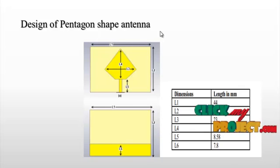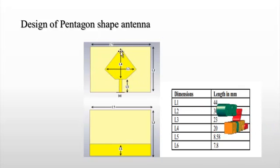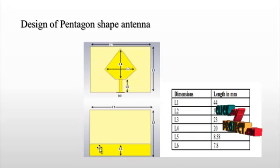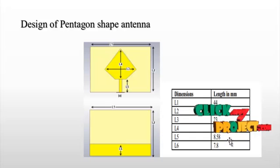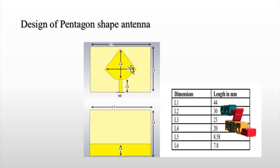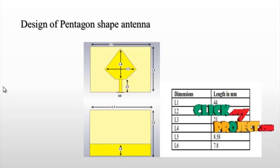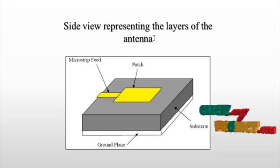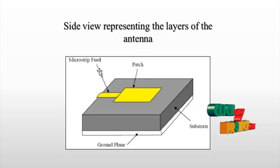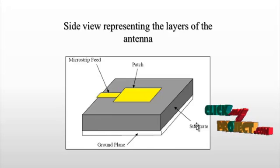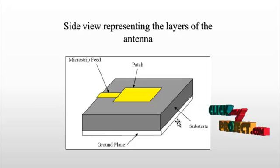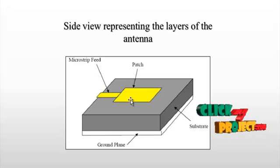This is the design of the pentagon shape antenna. This is the pentagon shape as formatted in the HFSS software. This is the partially ground — not a full ground plane, but a partial ground. The dimensions and lengths are in mm; L1 is 44 mm. This is the side view representation showing the layers: the patch, the microstrip feed, and the ground plane. In between the patch and the ground plane, we use the FR4 substrate.